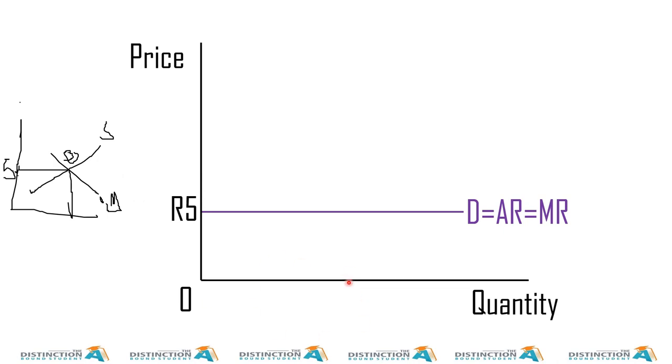Now to determine then how many units to produce, this individual has to first apply a rule, because this rule has to be applied because that's the goal of each and every business out there. And the goal is to maximize profit.